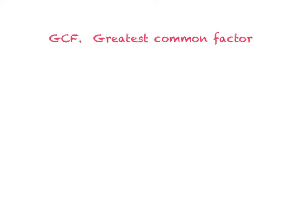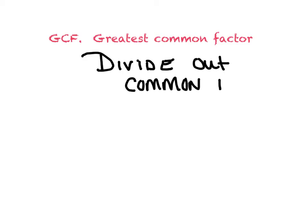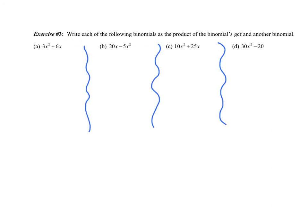Our first type of factoring is known as GCF, the greatest common factor. In this type of factoring, we want to divide out common factors. Let's try a few examples. Write each of the following binomials as the product of the binomial's GCF and another binomial. So basically, I'm saying, what does this term and this term have in common?